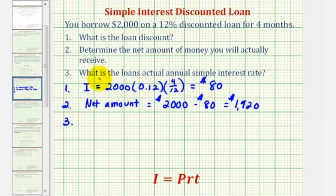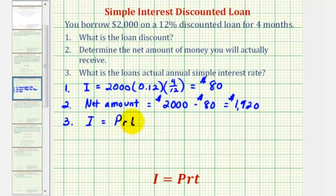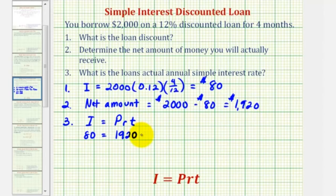For the last question, we want to determine the loan's actual annual simple interest rate, since we're only receiving one thousand nine hundred twenty dollars but paying twelve percent interest on two thousand dollars. Using the simple interest formula, I equals eighty dollars, and this time P, the principal, is the amount of money we actually receive: one thousand nine hundred twenty dollars. We're solving for R, the unknown interest rate, times T, which is four months or four-twelfths of a year, or one third.